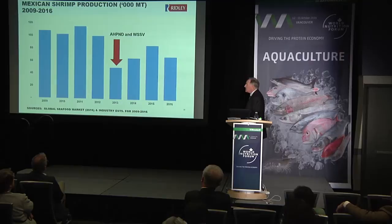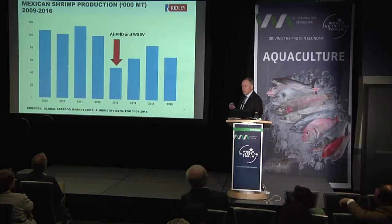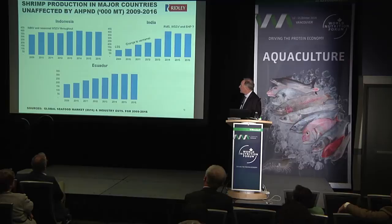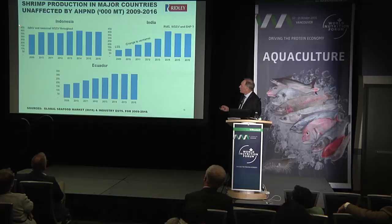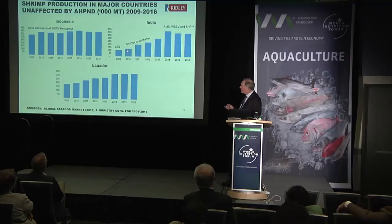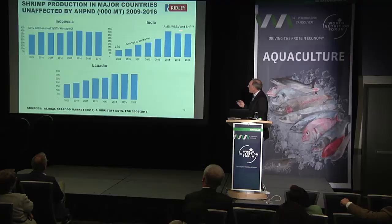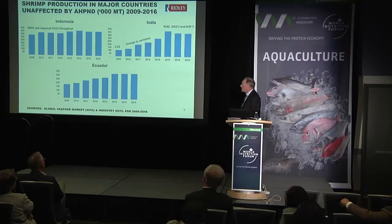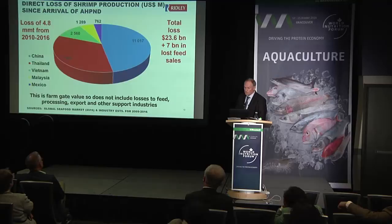EMS also reached Latin America starting in 2013, entering Mexico, where production dropped from about 100,000 tonnes down to 50,000. Some improvement has come through disease-resistant stocks, but it's quite variable — they're still struggling. By contrast, countries not suffering from AHPND right now like Indonesia still have problems with IHN, IMNV, and White Spot, but production has been fairly stable. India increased production considerably after switching to Vannamei, but now suffers from running mortality syndrome, White Spot, and EHP. Ecuador continues to improve in the absence of EMS.